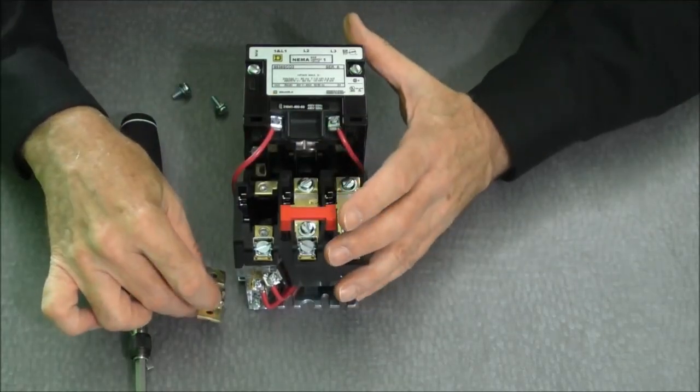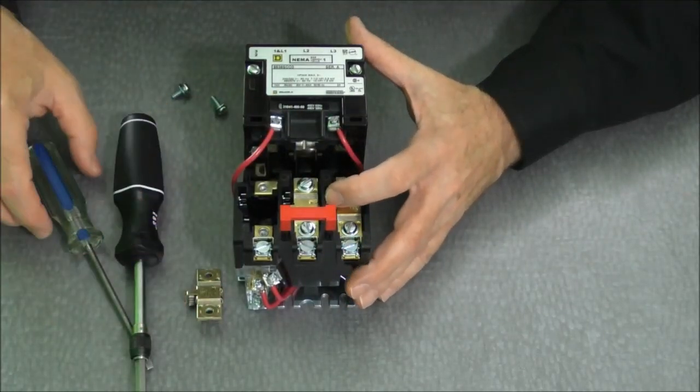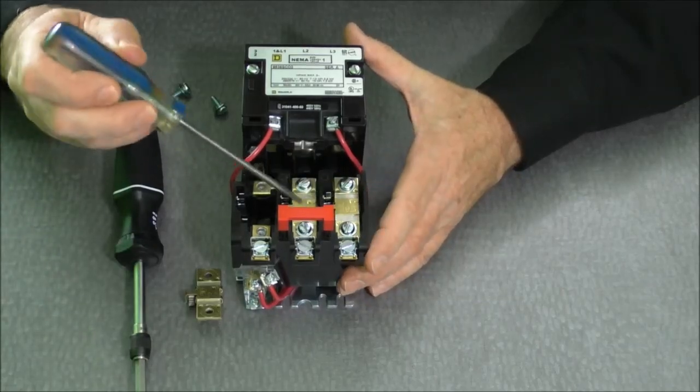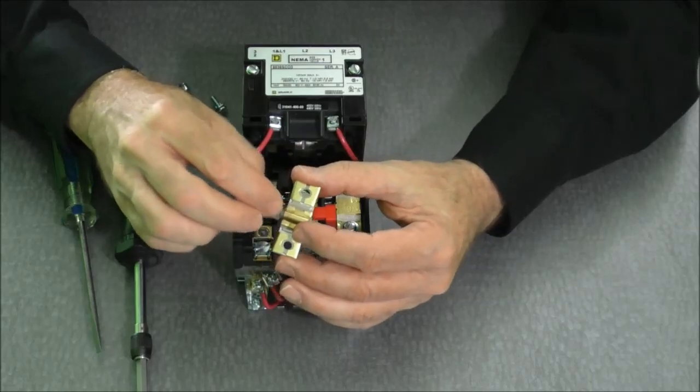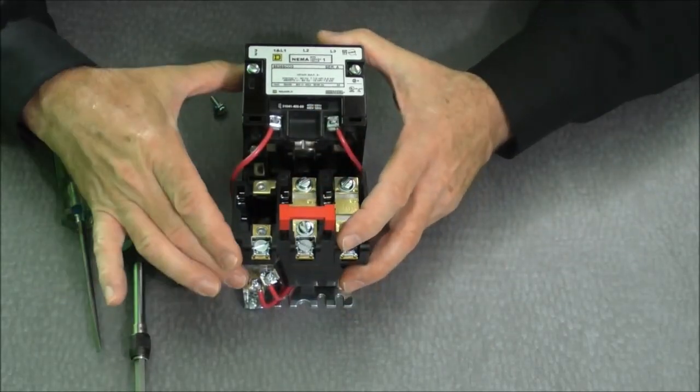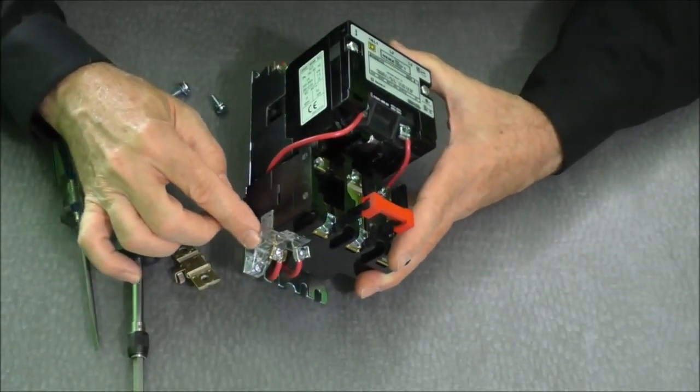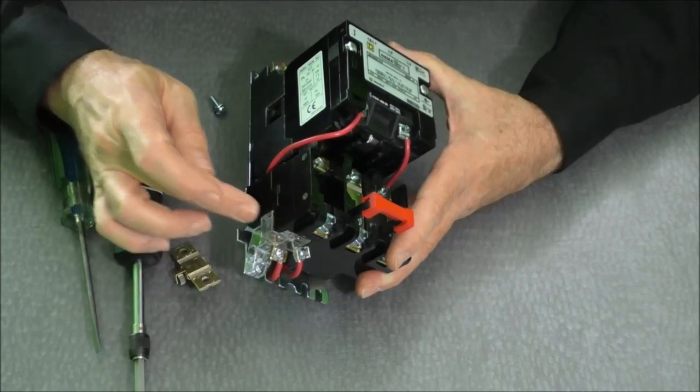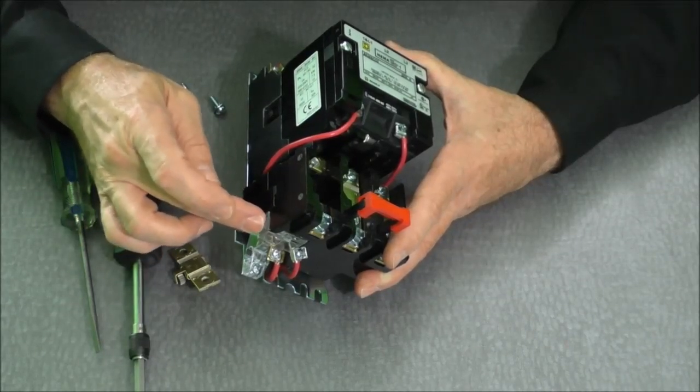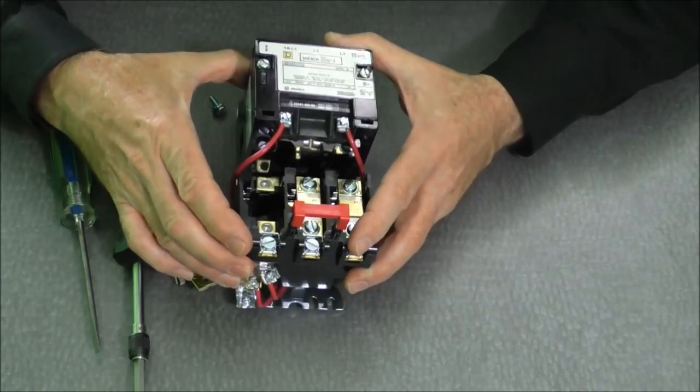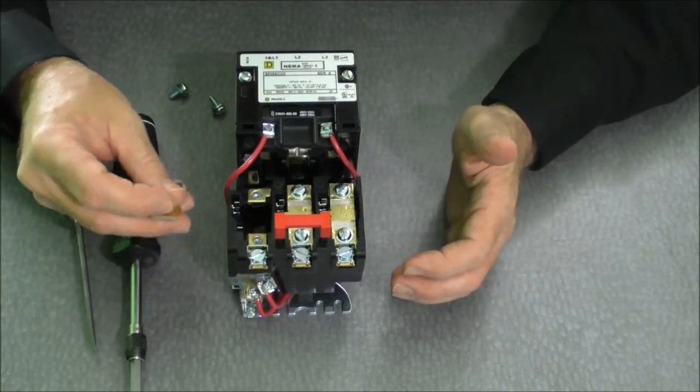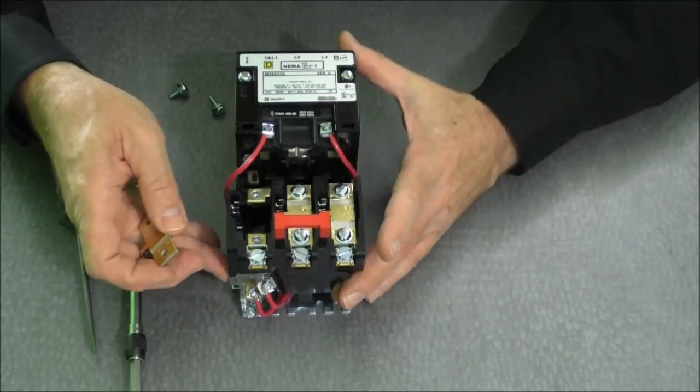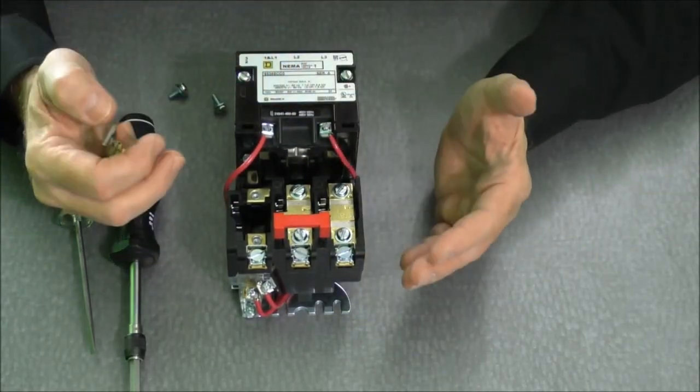The way the overload works is that we have pawl arms that are held in place by this particular star wheel. They will engage an auxiliary contact block which is a normally open held closed auxiliary contact block. The coils are wired through that auxiliary contact block. So if we would happen to trip, we would open that contact block, it would drop the coils out, and your motor would stop.